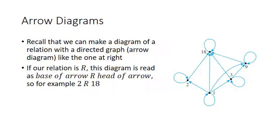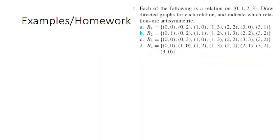Before the examples, let me remind you about arrow diagrams. We can represent a relation using a directed graph, where the base of an arrow is related to the head of the arrow. For instance, 2 is related to 18 because there's an arrow from 2 to 18. We also have 1 related to 2, 1 related to itself via a loop, and so on.